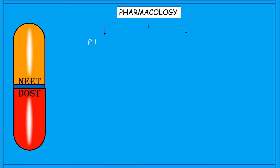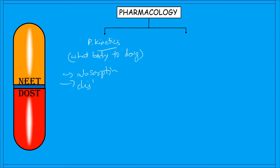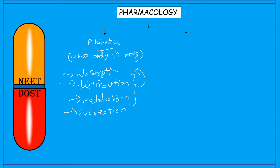Pharmacology is divided into two main divisions. The first is pharmacokinetics, which means what the body does to the drug when it is administered. It involves absorption of the drug, distribution of the drug, metabolism of the drug, and finally excretion of the drug.